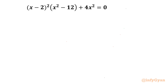Welcome back to Infigr, my dear friends. In this very exciting and powerful video of Quartic challenges, we have one very interesting equation today: (x minus 2) whole square times (x squared minus 12) plus 4x squared is equal to 0. We have to find out all 4 solutions of the equation. So let's get started.